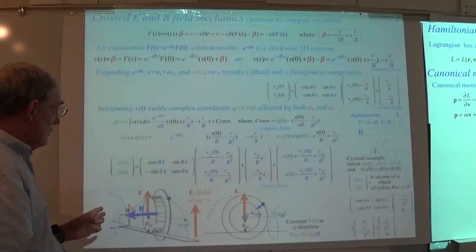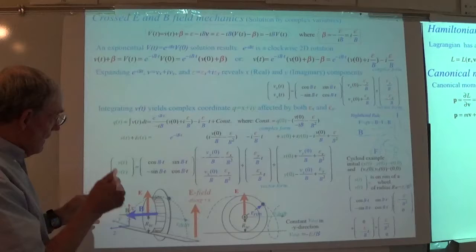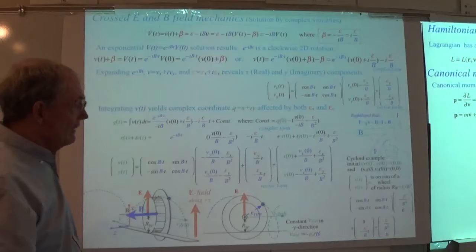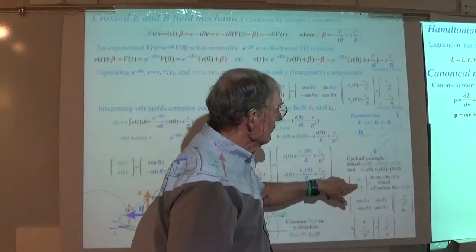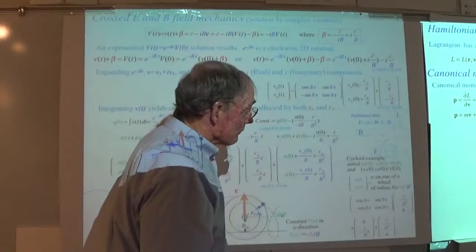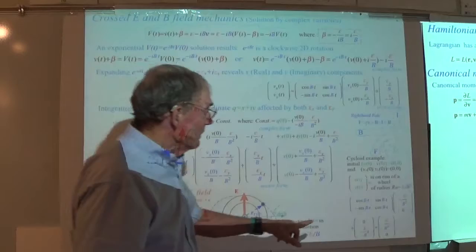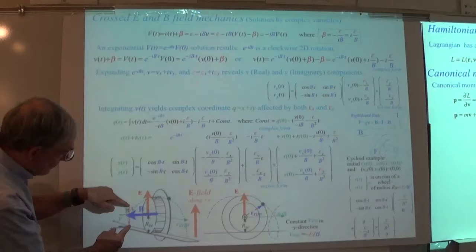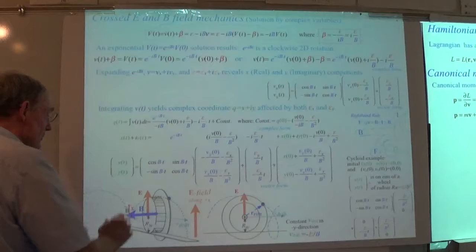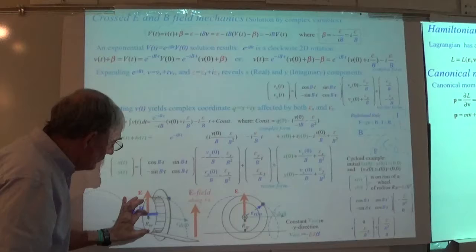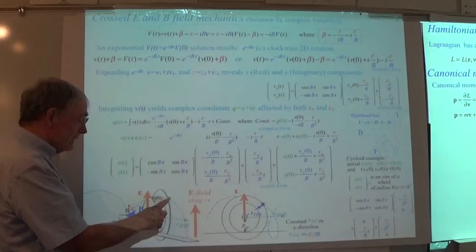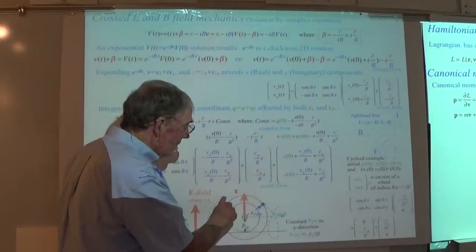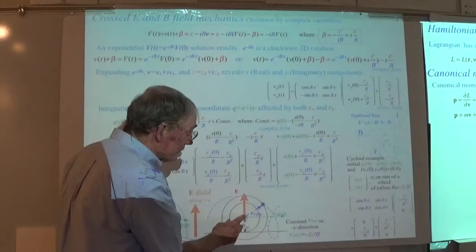The way I like to look at this geometrically is: there is a wheel of a certain size. This coordinate point is on the rim of a wheel of radius E/B^2. You're adding a velocity — this is for the case that the electric field is along the x direction. If the dot is on the rim of the wheel, you get an ordinary cycloid. But most of the time you get either a prolate cycloid or, if it's inside the wheel, a curtate cycloid — one that's not curly, more like a sine wave.